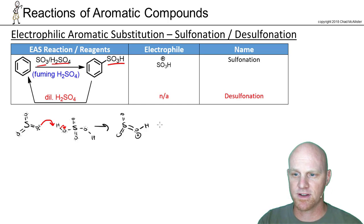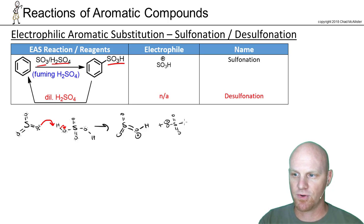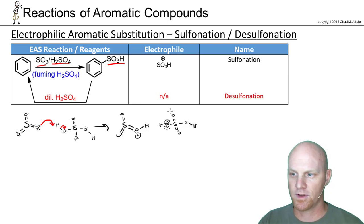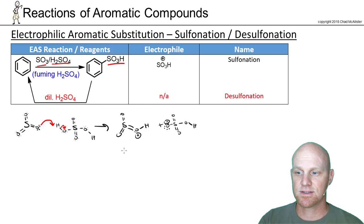We also get HSO₄⁻ as well, which we'll draw out because we're going to use it later as a base. The electrophilic species is SO₃H⁺, and that's what benzene is going to come and react with.